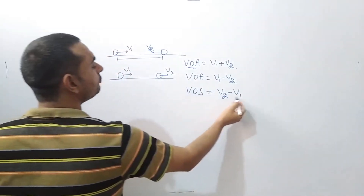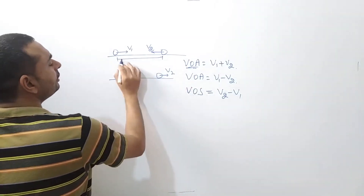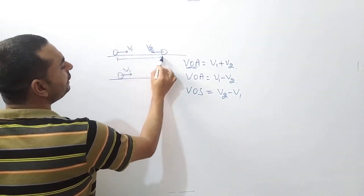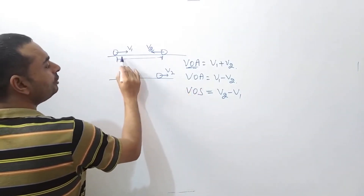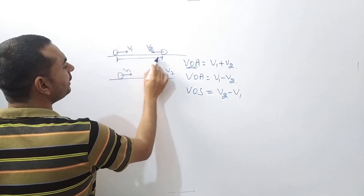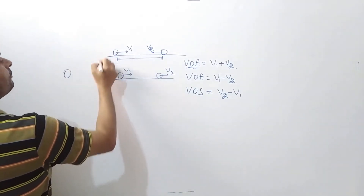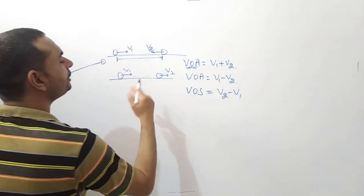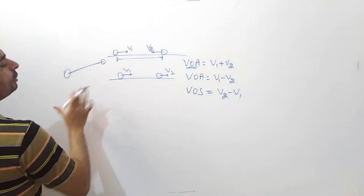Velocity of separation is V2 minus V1. So definition of velocity of approach and separation: it is the relative velocity of the balls along the line joining the two balls, ya two particles. Relative velocity of approach or separation is relative velocity along the line joining the two particles. Along this line joining the two particles — as long as the particles are moving along this line — relative velocity, if we decrease separation we call it approach velocity, and if we increase it we call it velocity of separation.